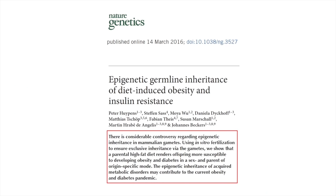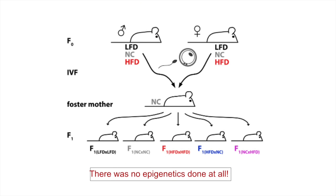This happens all the time. A third example had 'epigenetic germline inheritance' in the title. They did an experiment; there was no epigenetics done at all, yet epigenetics is in the title. At this point I got so annoyed I wrote a letter to the editor — this is Nature Genetics, the paper everybody wants to publish in — and they said they were not interested. Basically, you publish your paper better if it has epigenetics in the title. This is how you get your grants, your tenure, and your papers published.